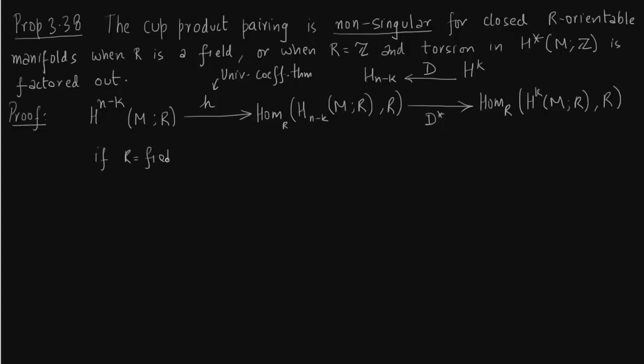So h comes from universal coefficient theorem. And this d* comes from map d which is the Poincaré duality map from the kth cohomology group to homology group H_(N-K). So this thing is clear where this map comes from. So the first thing is we want to show h is an iso.